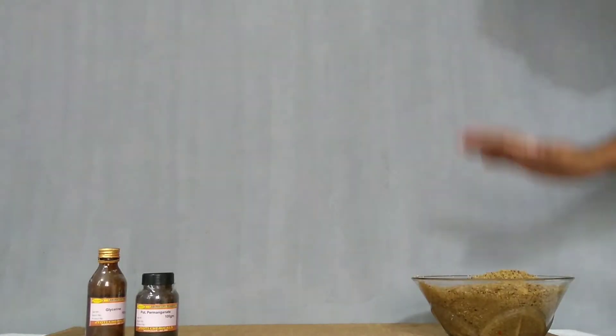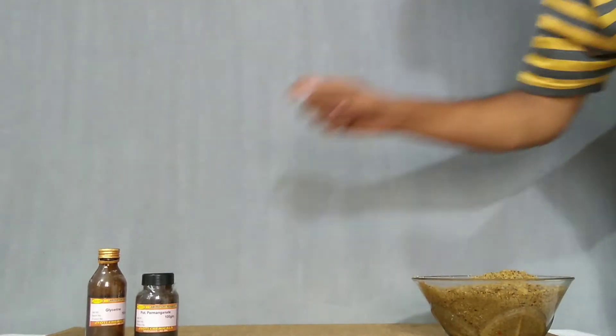To build a volcano we need wet sand, glycerin, and potassium permanganate.